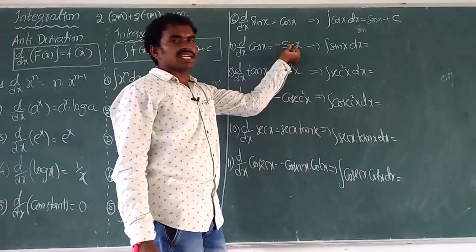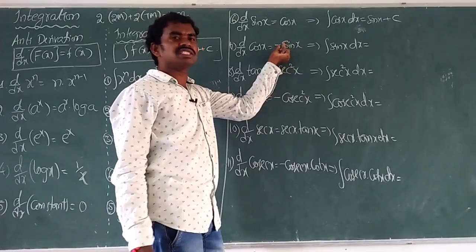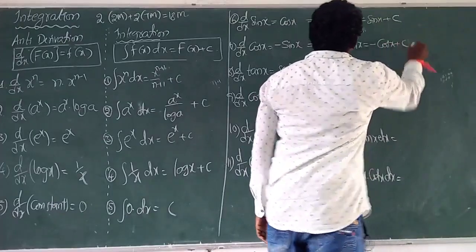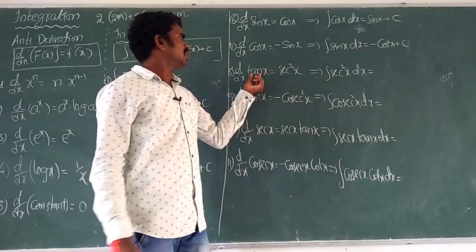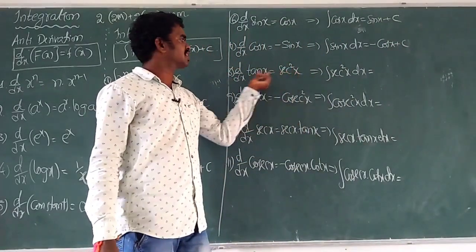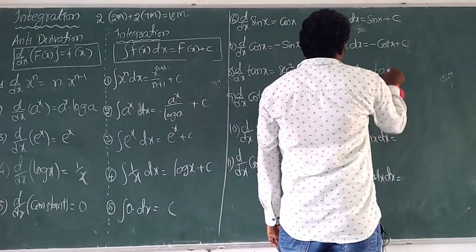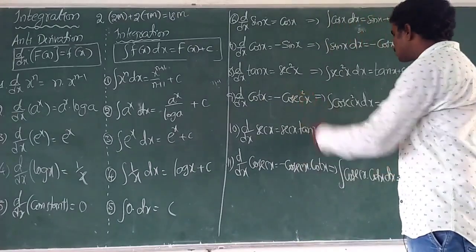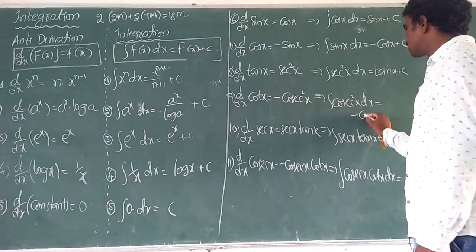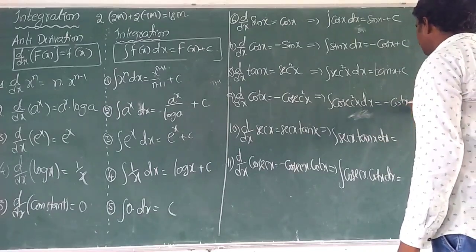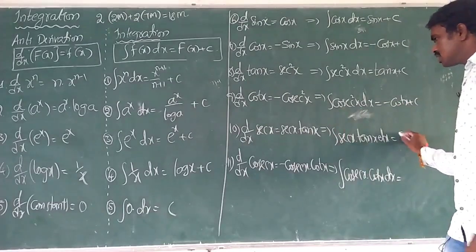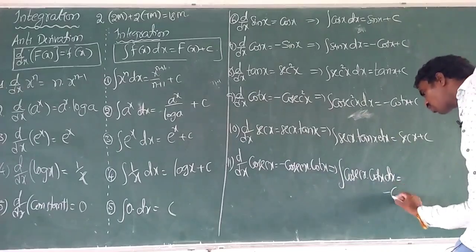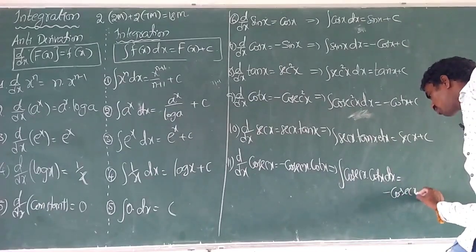Integration of sin(x) — since there is a minus sign — becomes minus cos(x). Integration of sec²(x) is tan(x). Integration of minus cosec²(x) is cot(x) — noting the minus-minus becomes plus. Integration of sec(x)·tan(x) is sec(x) plus c. Integration of cosec(x)·cot(x) is minus cosec(x) plus c.